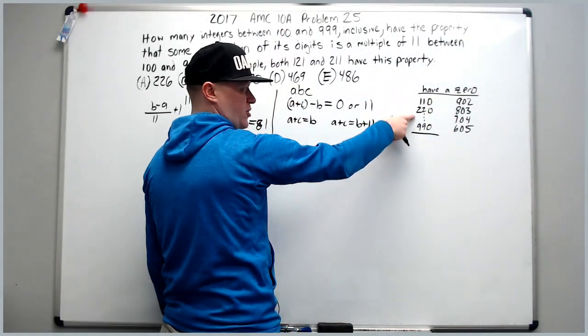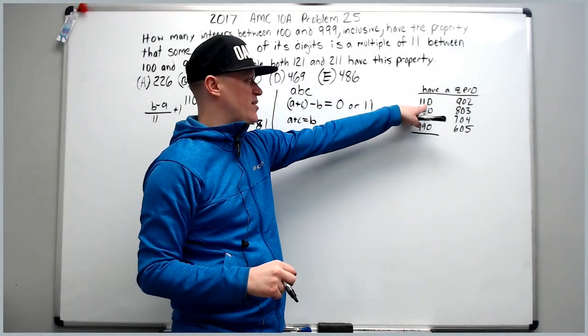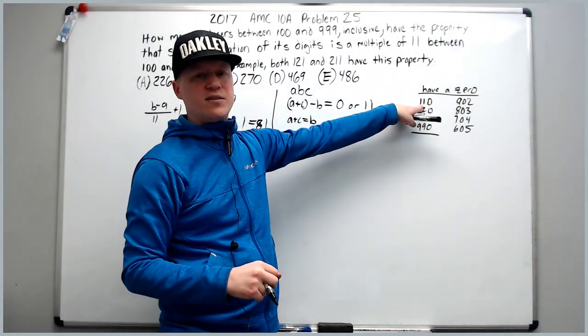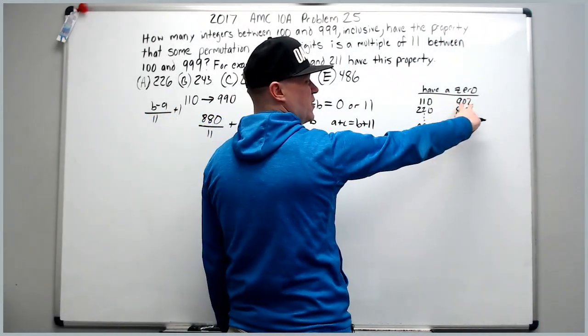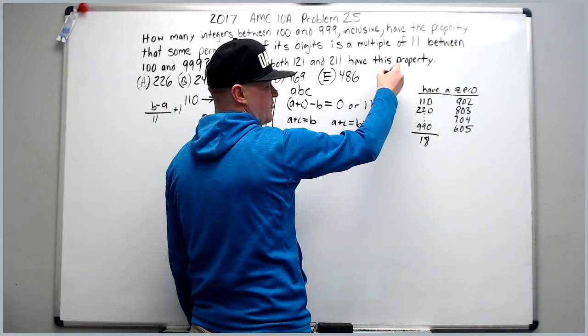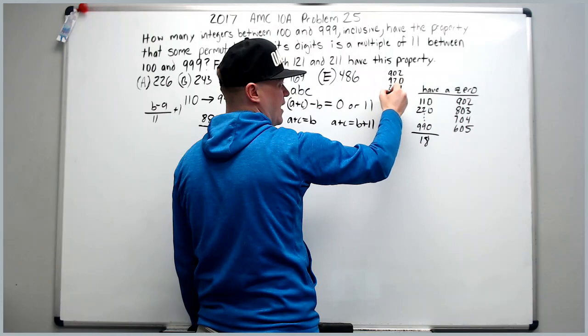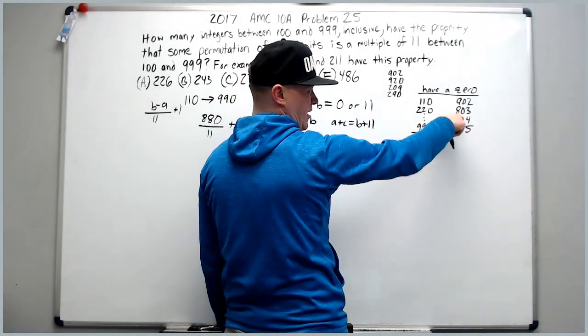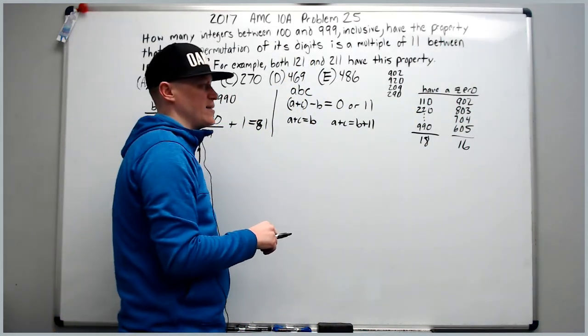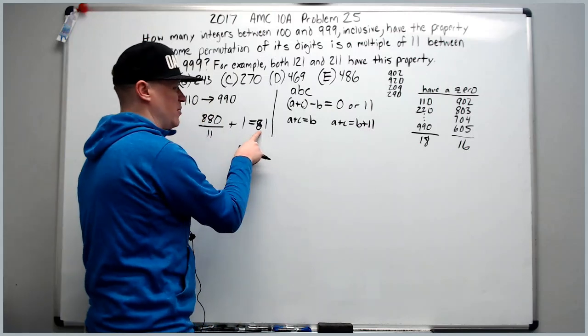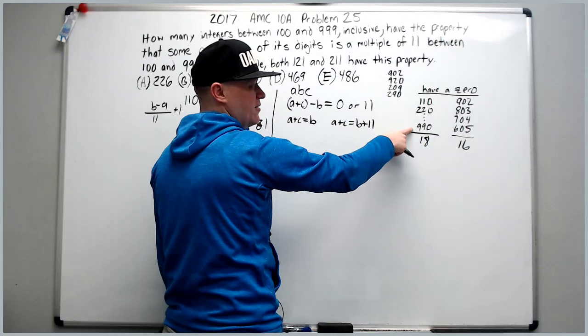All right, so how many arrangements do the first column have? They're going to have only two arrangements each because two of their digits are the same, and the 0 cannot go in the first digit. So it only has two places. Nine times two is 18. The other ones each have four arrangements. For 902, for instance, it's 902, 920, 209, and 290. So four times four,